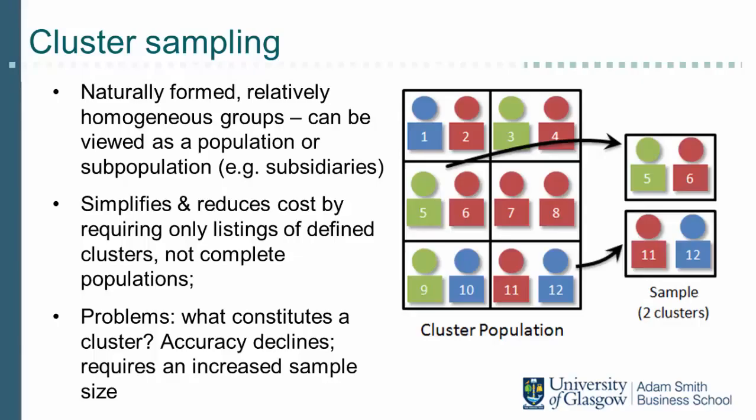In the second stage we select subsidiaries within the previously selected countries, and in the third stage employees are randomly sampled from those subsidiaries. Multi-stage cluster sampling makes random sampling feasible, but the margin of error is hard to determine because the probability of being included in the sample is no longer the same for all elements. Cluster sampling is also usually associated with a larger margin of error.